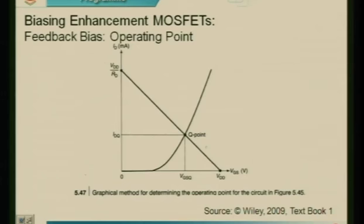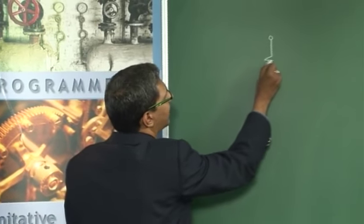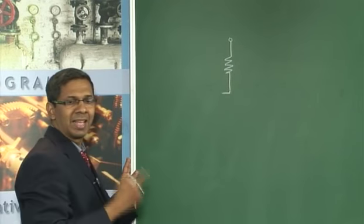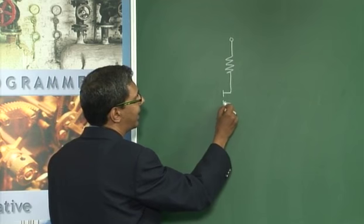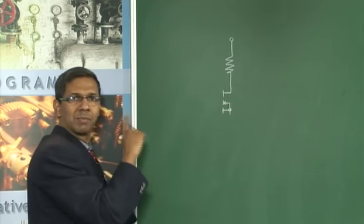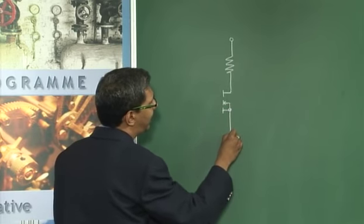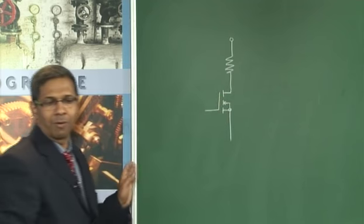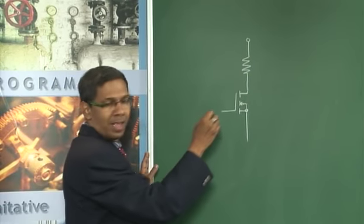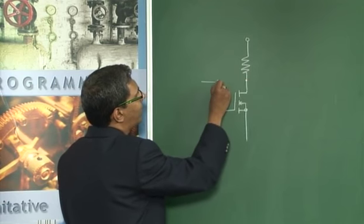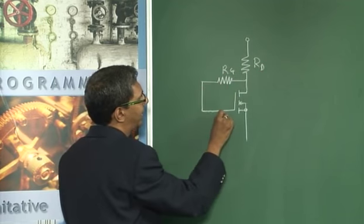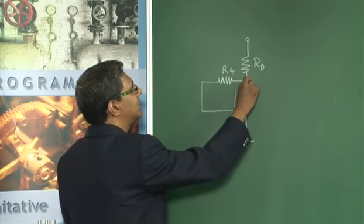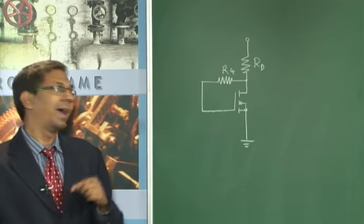Let us take an example. Moving to the board, we draw the feedback bias configuration circuit: VDD at the top, drain resistance RD, then the enhancement MOSFET — note it has a dotted line between drain and source indicating it is enhancement type. The substrate is shorted to the source, making it a three-terminal device. The gate is connected through gate feedback resistance RG back to the drain, and the source goes to ground.